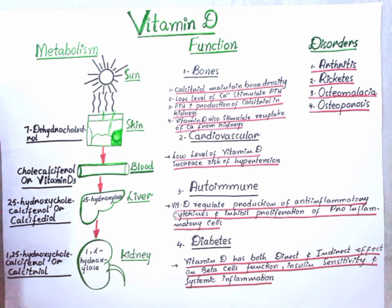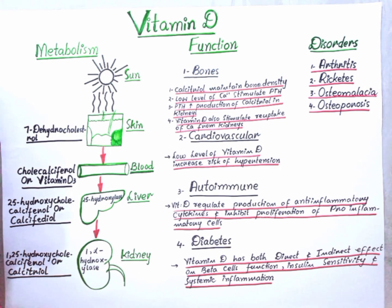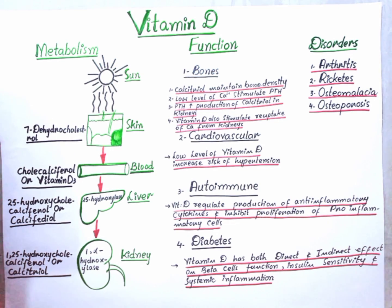Vitamin D, which is also known as calciferol, is one of the four fat-soluble vitamins: vitamin A, D, E, and K. We have discussed in our last lecture that a vitamin is a nutrient that we require in a very small amount and we cannot produce ourselves, but we need these vitamins for our normal growth and development.